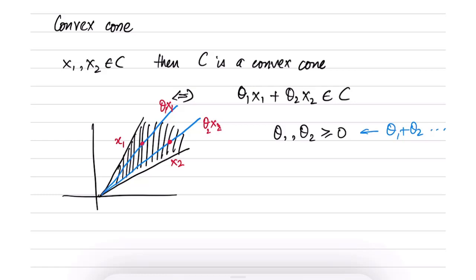Essentially the set θ1x1 plus θ2x2 contains all the points or all the lines in between these two lines. So this cone that you see here is essentially the cone that contains θ1x1 plus θ2x2.